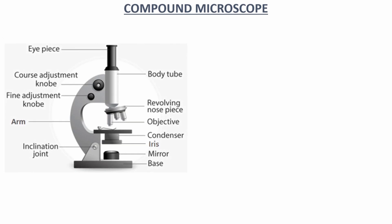Here's a picture of the compound microscope with its different parts. We have the eyepiece, the body tube, the revolving nose piece, the objective, the condenser, the iris, the mirror, the base, the inclination joint, the arm, the fine adjustment knob and the coarse adjustment knob.